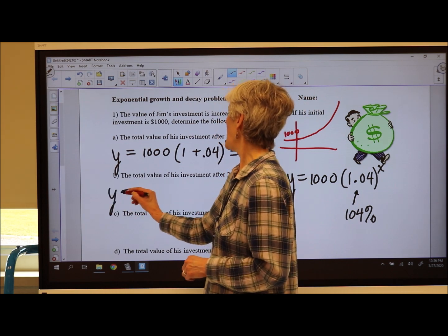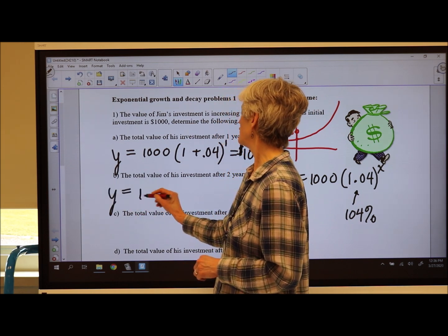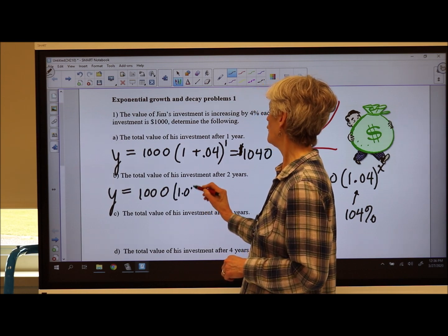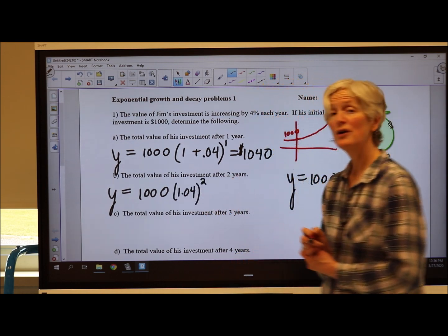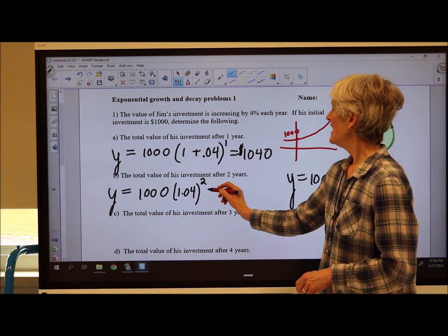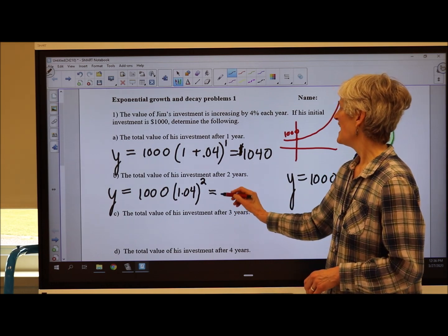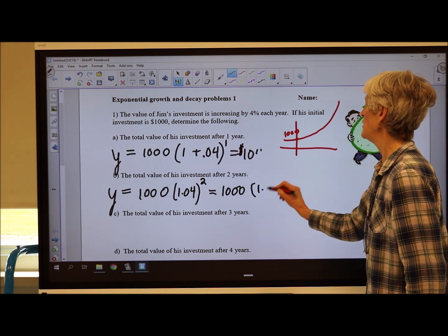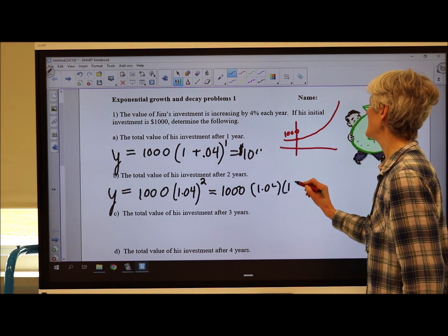The total value of his investment after two years? I can do 1.04 raised to the 2. You can always think of that as 1,000 times 1.04 times 1.04 again.